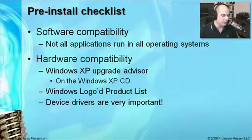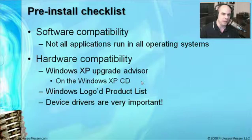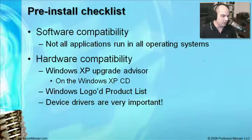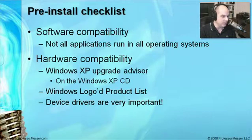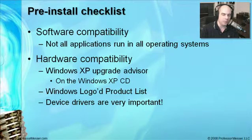Fortunately, Microsoft has put something called the Windows XP Upgrade Advisor on their website and on the CD that Windows XP ships with. You can run this program prior to doing the upgrade, and it will tell you if everything is going to run and if there are device drivers available. There's also something called a Windows Logoed Product List — a certification Microsoft provides to products that will work on Windows XP. If your printer has a Windows logo or is on that list, it should work just fine. Make sure you have device drivers for Windows XP before you begin.